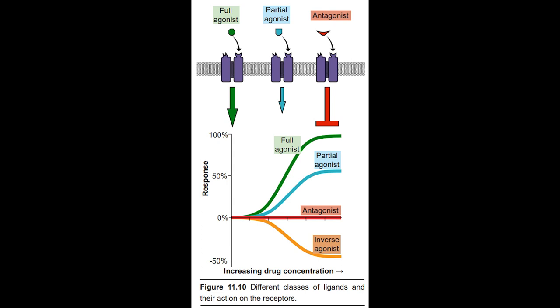The specific site on the receptor protein where agonists bind is called the orthosteric site, or active site. The interaction between a receptor and an agonist can be described by the analogy of a lock and key — the receptor is the lock, a large protein complex that spans the cell membrane. Receptors have an outward-facing side that responds to the presence of an agonist by physically changing shape, similar to how a lock changes when the correct key is inserted. Receptors are very specific and will only open to chemical structures that match the active site — a lock won't open in the presence of any random key.